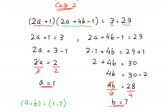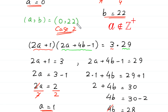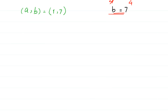In Case 1 we had the solution 0 comma 22, but because we are looking for positive integer values where a must be greater than 0, the solution a comma b equals 0 comma 22 is rejected. So the only solution to this equation is a comma b equals 1 comma 7.